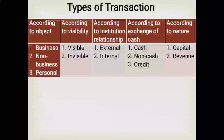Credit transactions include goods sold on credit, furniture purchased on credit, goods purchased on credit, and old computers sold on credit. According to nature, capital transactions involve large amounts of money on a long-term, non-recurring basis — for example, additional capital, loans, furniture purchase, land purchase, and land sold. Revenue transactions are recurring, short-term, and involve smaller amounts — for example, goods purchased and goods sold in cash.